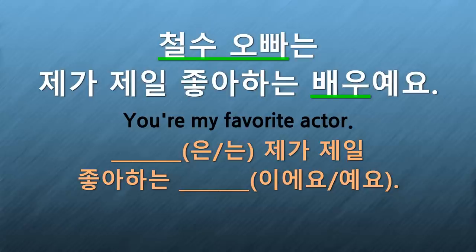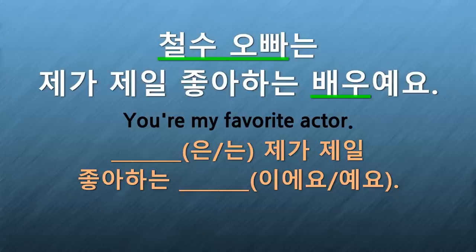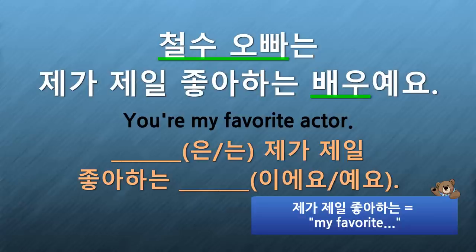To say that they're your favorite, say their name followed by the topic marker, then 제가 제일 좋아하는, and then say what they are, such as an actor or a singer. And finally, 이에요 or 예요.